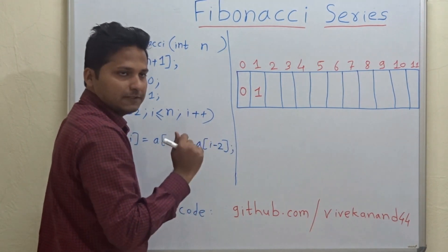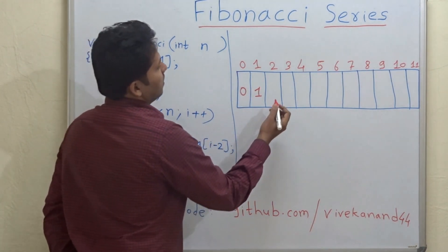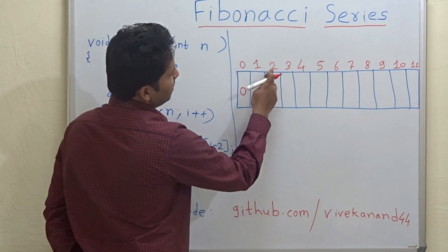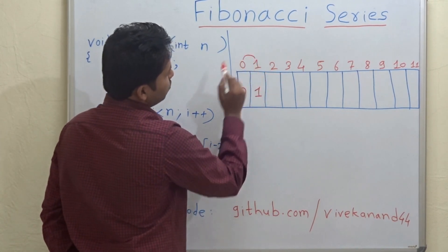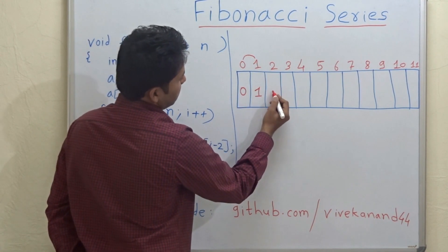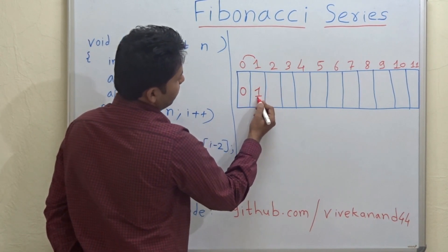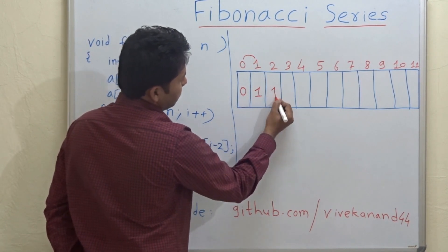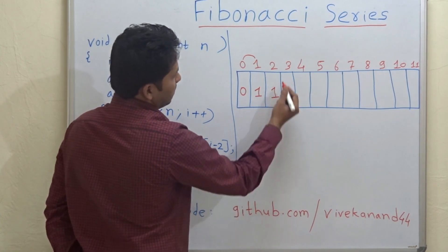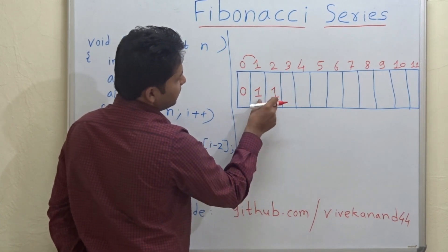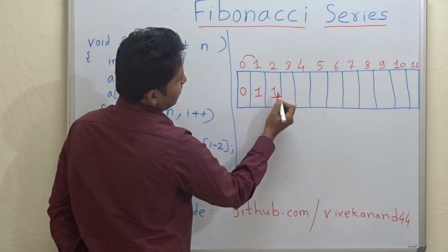Now the third element will be the addition of the previous two elements. In this case, it will come 1 plus 0 is 1. So the third element will be the addition of these two elements: 1 plus 1 is 2.